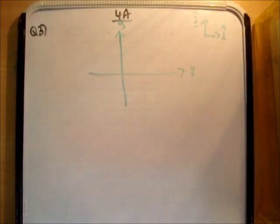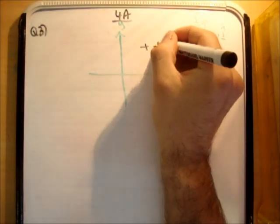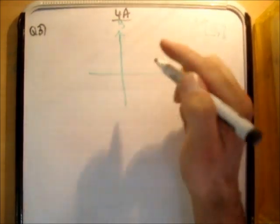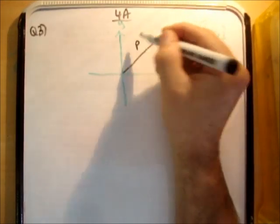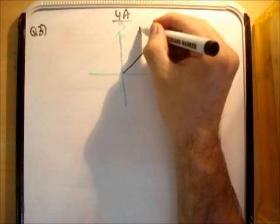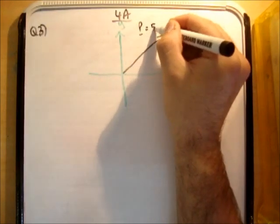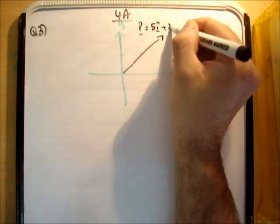Next we need to draw the two vectors themselves. The first one, P, is equal to 5i hat plus 2j hat. So it's in the plus plus quadrant. We draw it up here like this. The vector P is equal to 5i hat plus 2j hat.